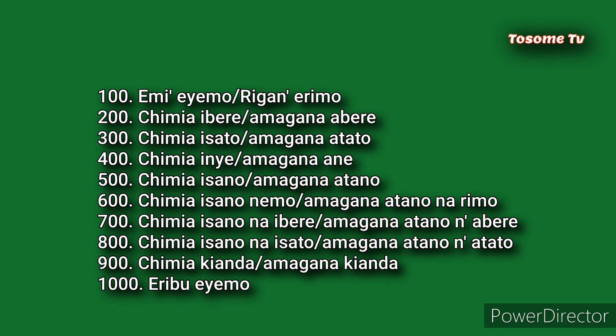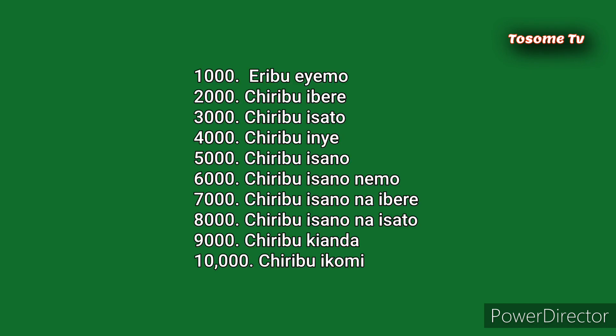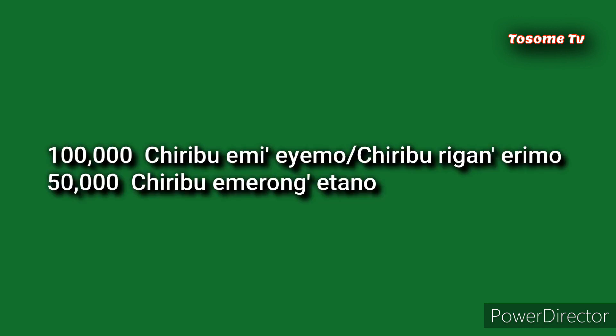Then you have ELFU AYAMU — one thousand. ELFU AYAMU. In AKGUC we so often use ELFU instead of the F sound, so you will hear ELFU AYAMU. CHIRIBU IVERE, CHIRIBU ISATO, CHIRIBU INYE, CHIRIBU ISANO. CHIRIBU ISANO NEMO, CHIRIBU ISANO NAIVERE, CHIRIBU ISANO NAISATO, CHIRIBU KIANDA, CHIRIBU IKOMI. So you can have CHIRIBU LIGA NELIMO — that's one hundred thousand. Or you can say CHIRIBU EMIAYEMO — that's fifty thousand.